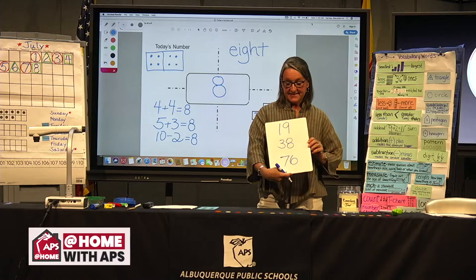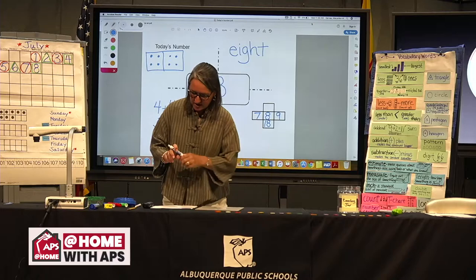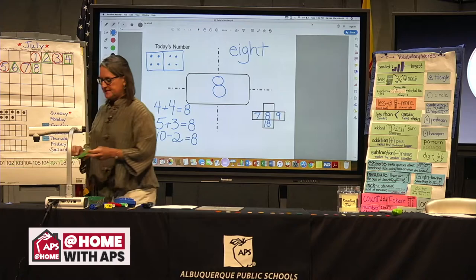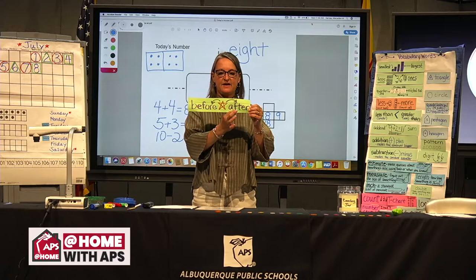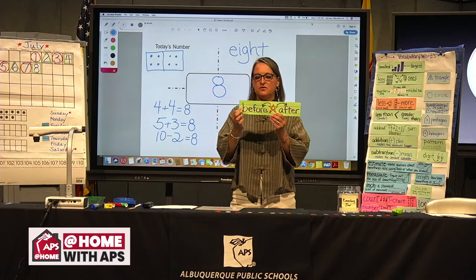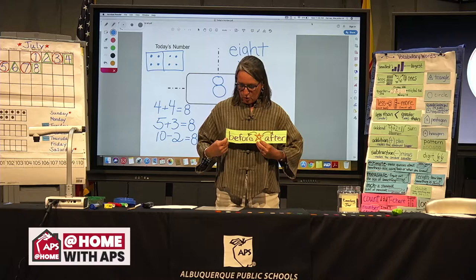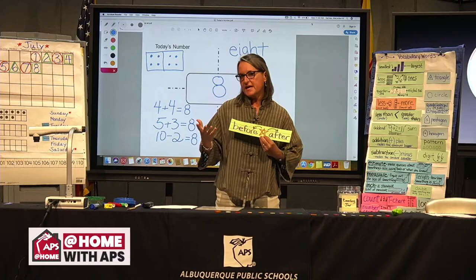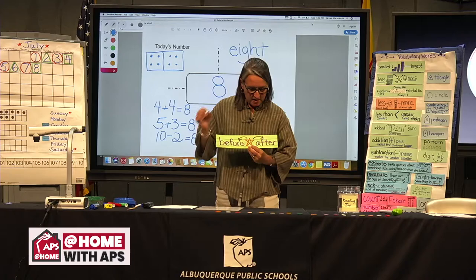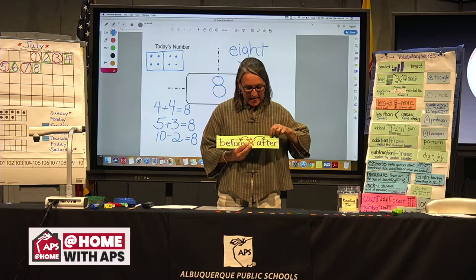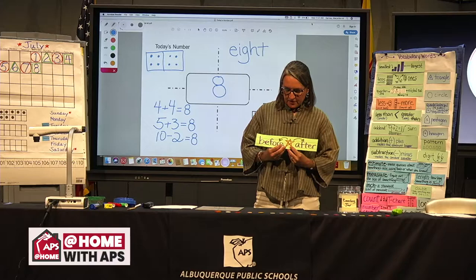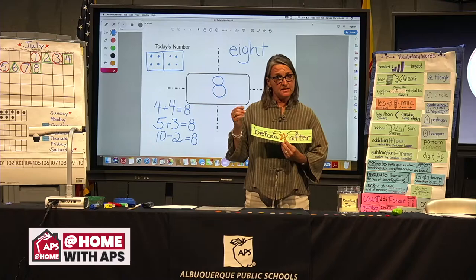We have a couple of vocabulary words to add before we turn it over to Mrs. Obenshain: before and after. If something is before, it usually comes in front of something else on a piece of paper, or it's the thing you say first. Like if we're counting, we say one first before we say two. If something is after, it usually comes behind something else — if you were counting and said two, you would say three after two.